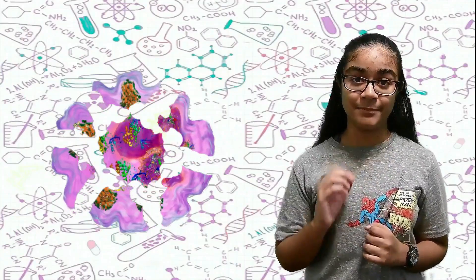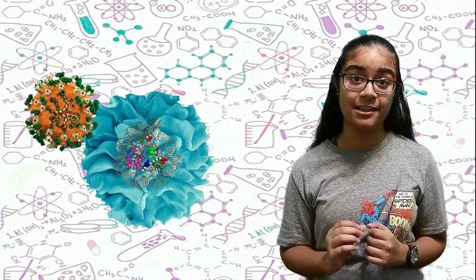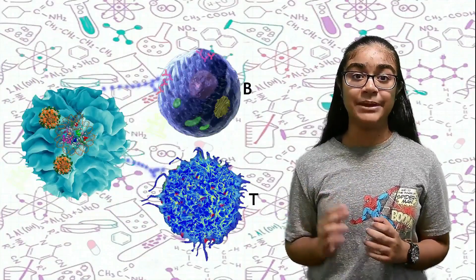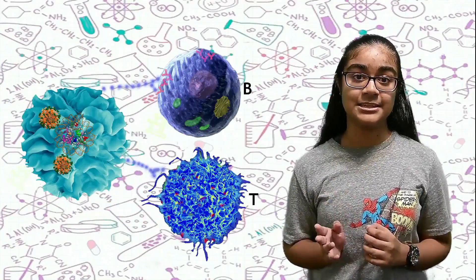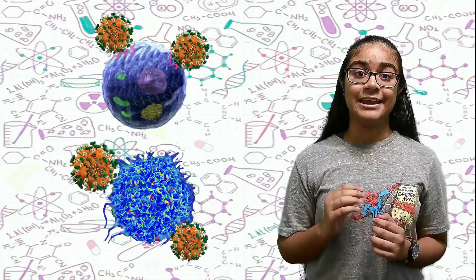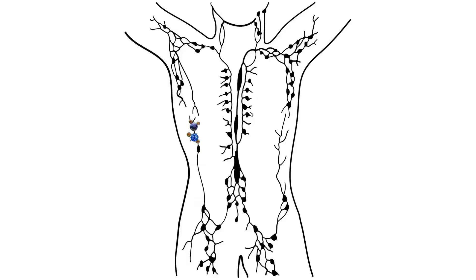If the measles virus infected a dendritic cell, however, the infected cell would try to alert B and T cells, but it does no good because it spreads the virus to them all. Soon enough, the infected B and T cells travel in the bloodstream to the lymphatic system.